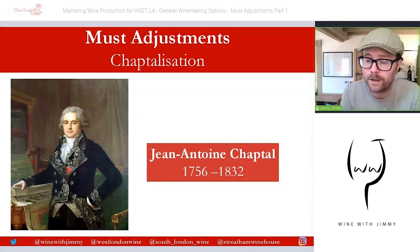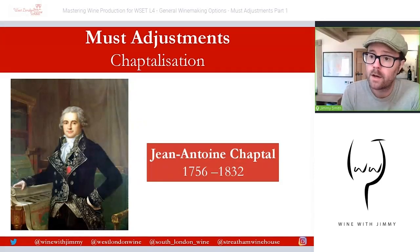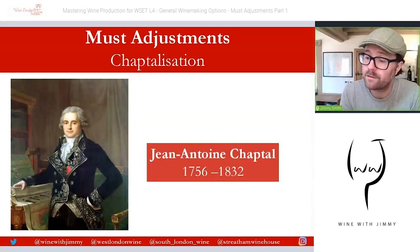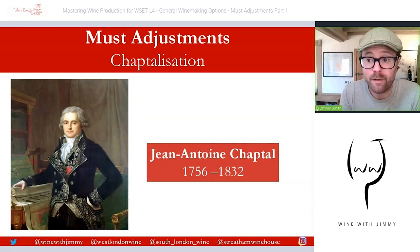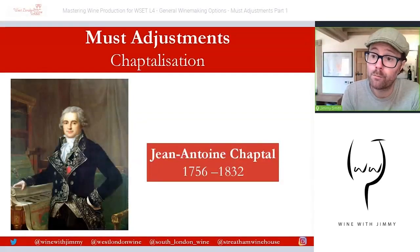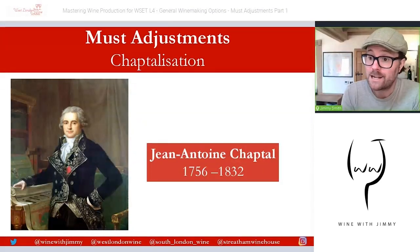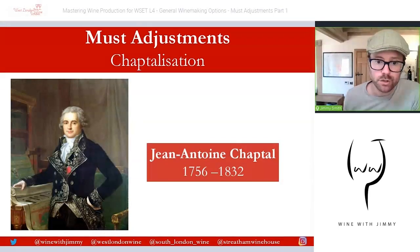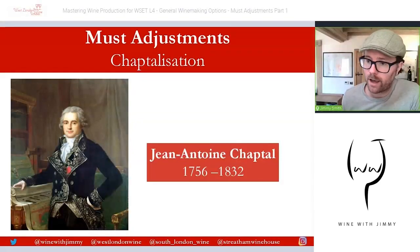Jean-Antoine Chaptal was a scientist, a polymath, a very important character during Napoleonic times, and he was the French Minister of Agriculture. He was tasked with roles including overseeing overseas territories where sugar was being hugely — and indeed overproduced. Genius techniques were needed to put that sugar to use, and one of those was to bring it to France and add it to musts to increase potential alcohol. The source of sugar can be beet or sugar cane.